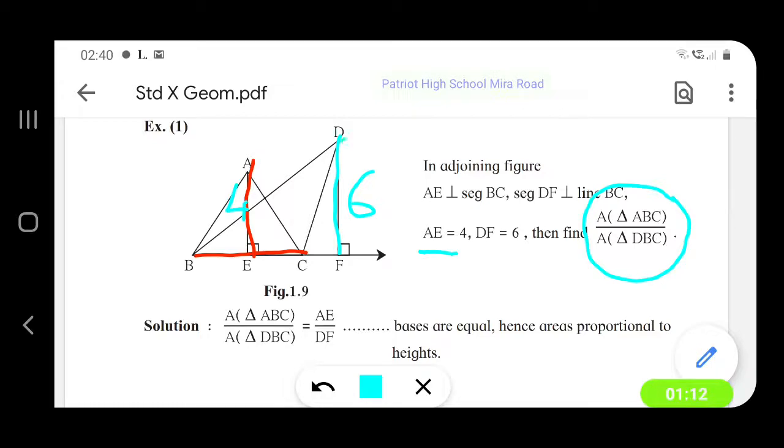This is the triangle DBC, DBC and triangle ABC.